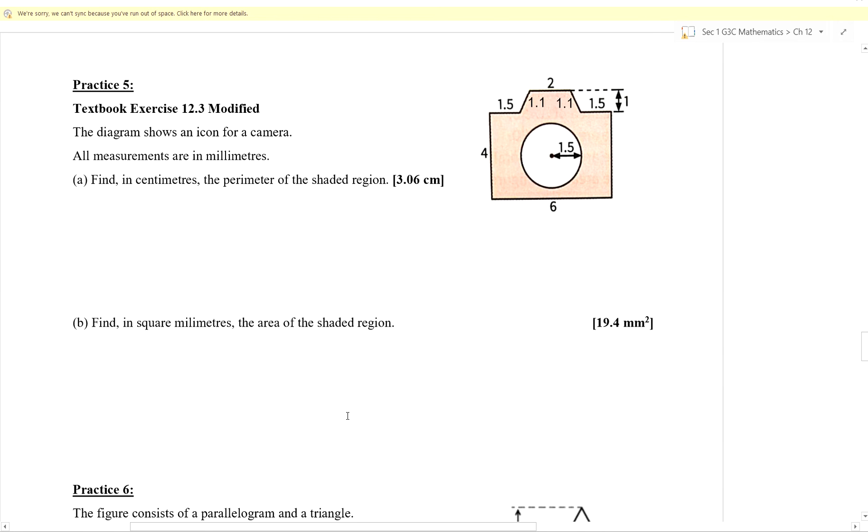Now we will continue with this question, Practice 5. This is an icon for a camera. Measurements are in millimeters, so it's quite tiny actually. Find, in centimeters, the perimeter of the shaded region. Quite uncommon for them to ask you for a perimeter when you have a figure like this with a hole in the center. Because perimeter, as we know, should be the outline, right? Whatever shape it is, just measure the outline. So in this case, do we consider the center circle as part of the outline? Yes, we do actually. Quite a rare kind of question. But when they ask for a perimeter, just all the outlines, inside outline also.